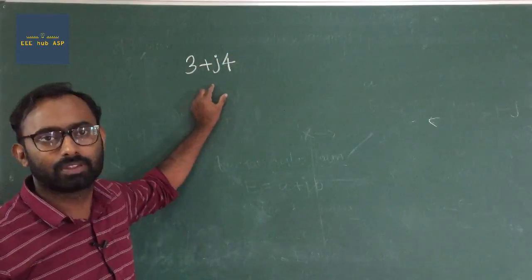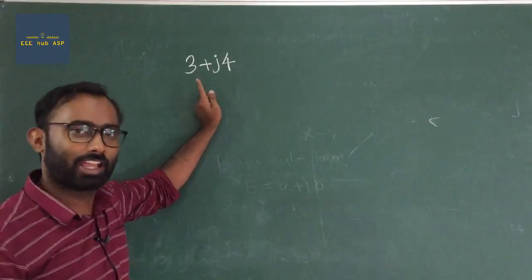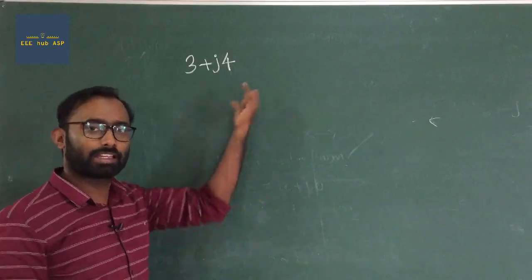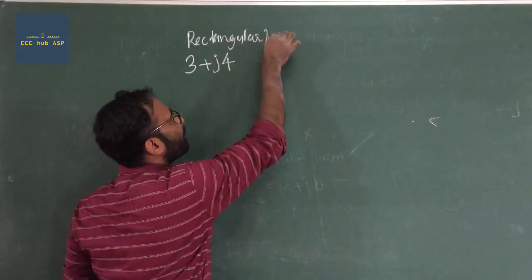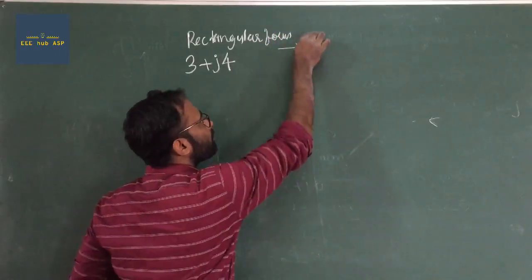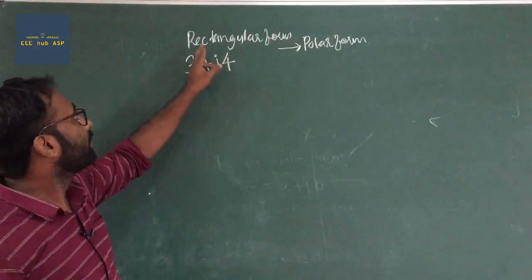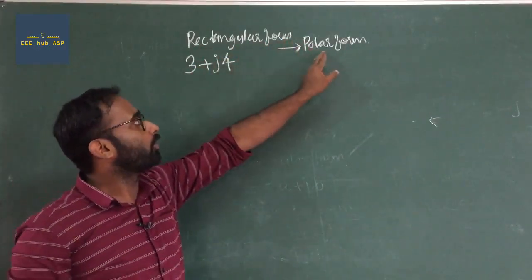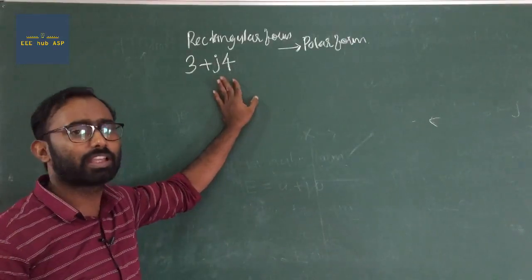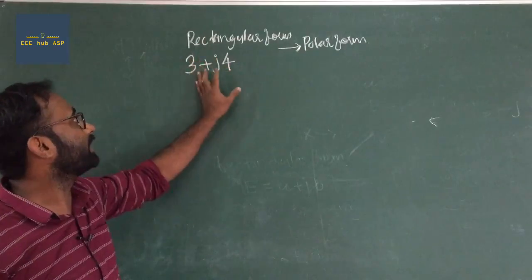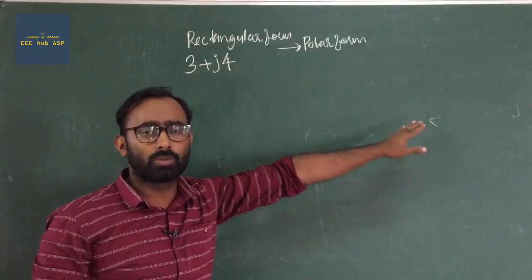What form is it? 3 plus j4 — what form is it? It is a rectangular form. It is a rectangular form. It is a triangle form.